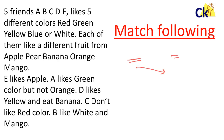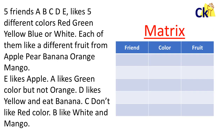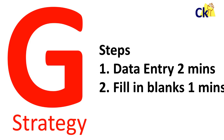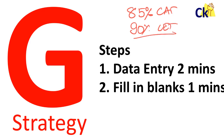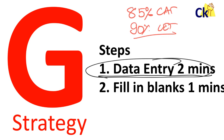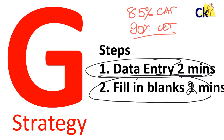My G Strategy is very simple. I've built a process — the same way for every question. Step one: I do data entry. I don't use my brain, I just enter the data into the system for two minutes. Then, depending on the difficulty level, I fill the blanks in another two minutes. For me, a matrix-based set is nothing but fill-in-the-blanks.